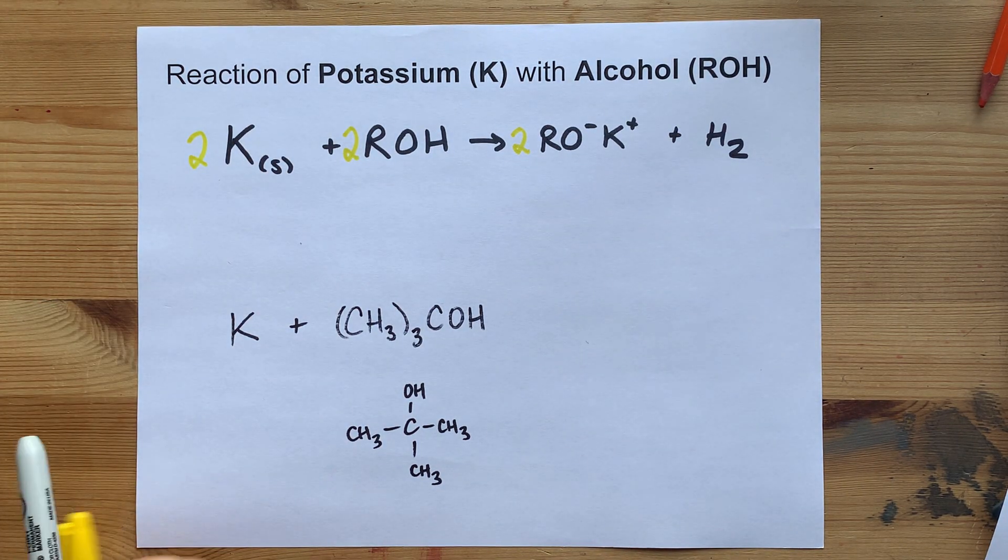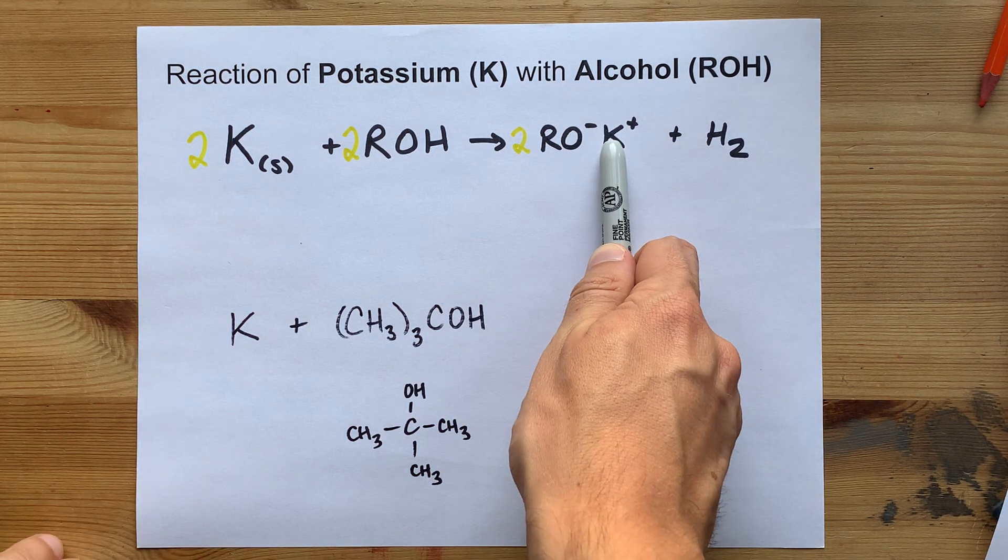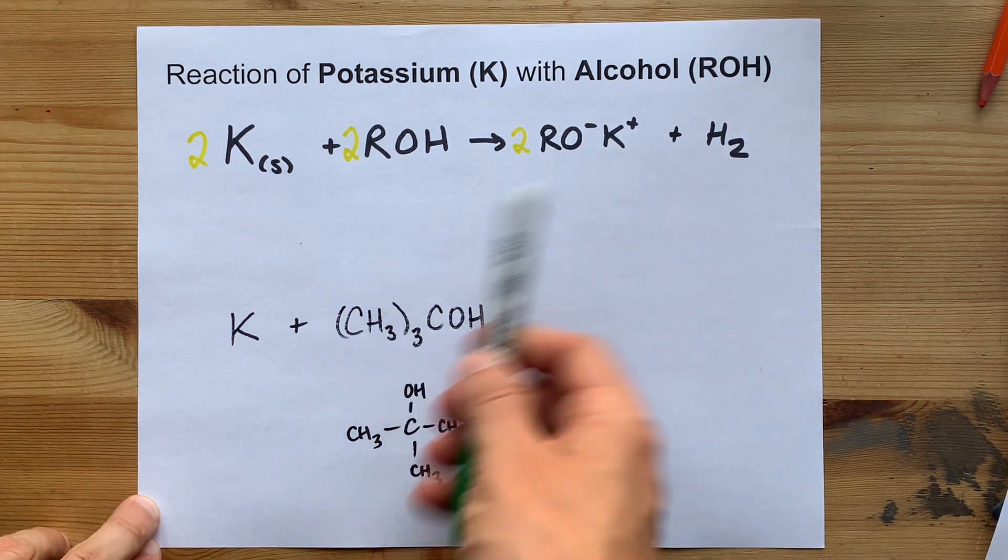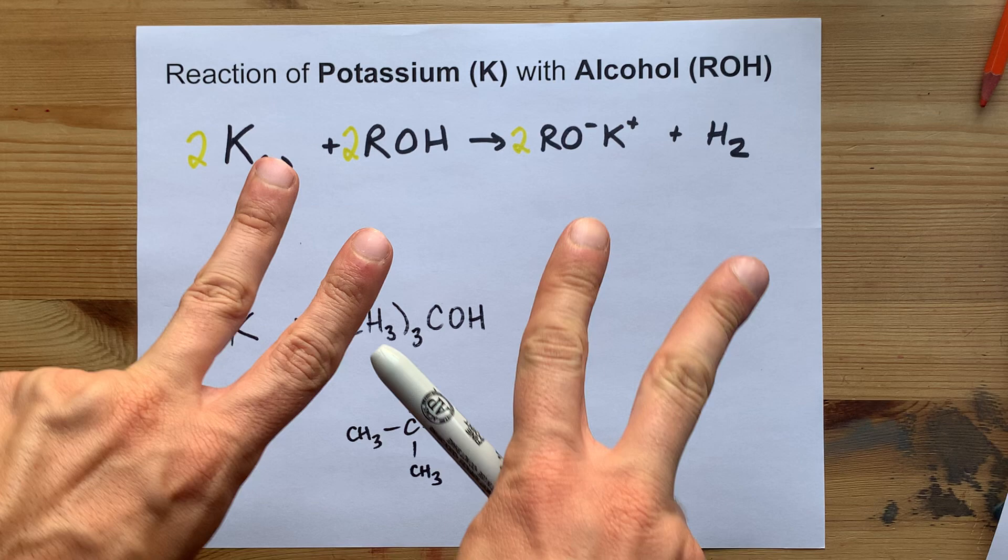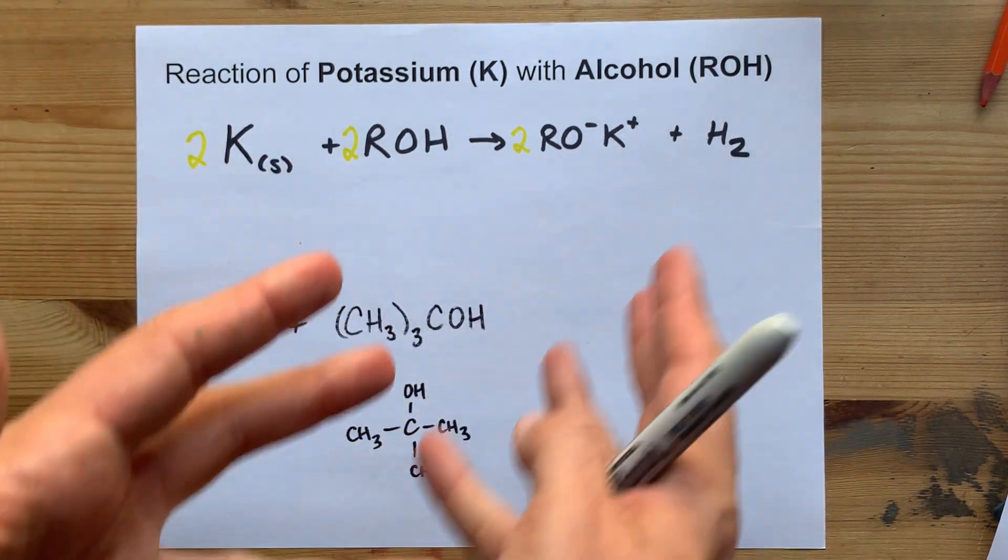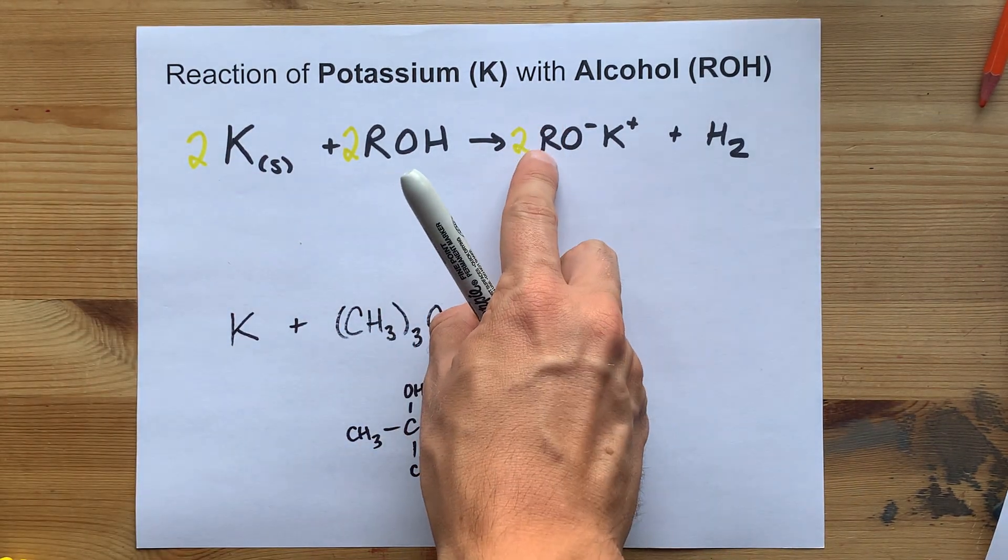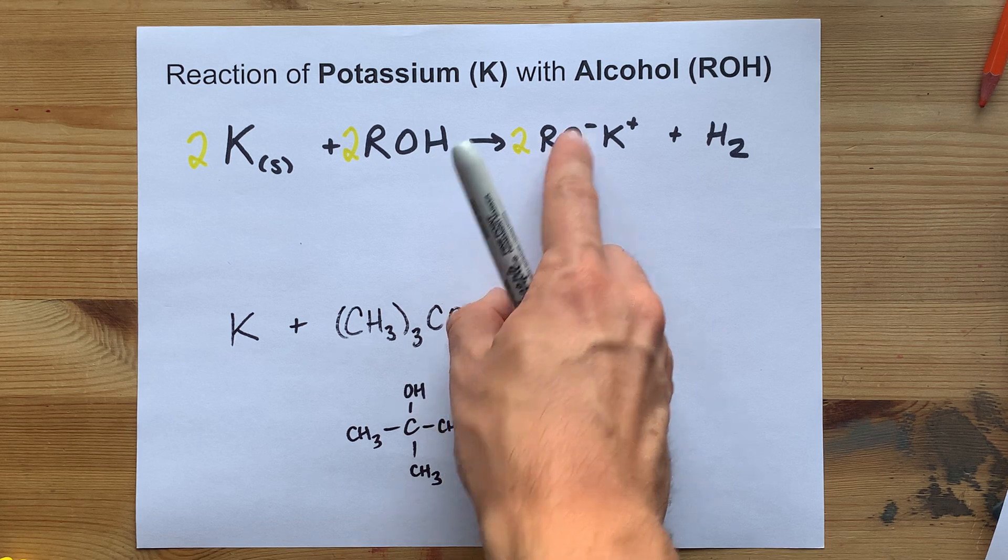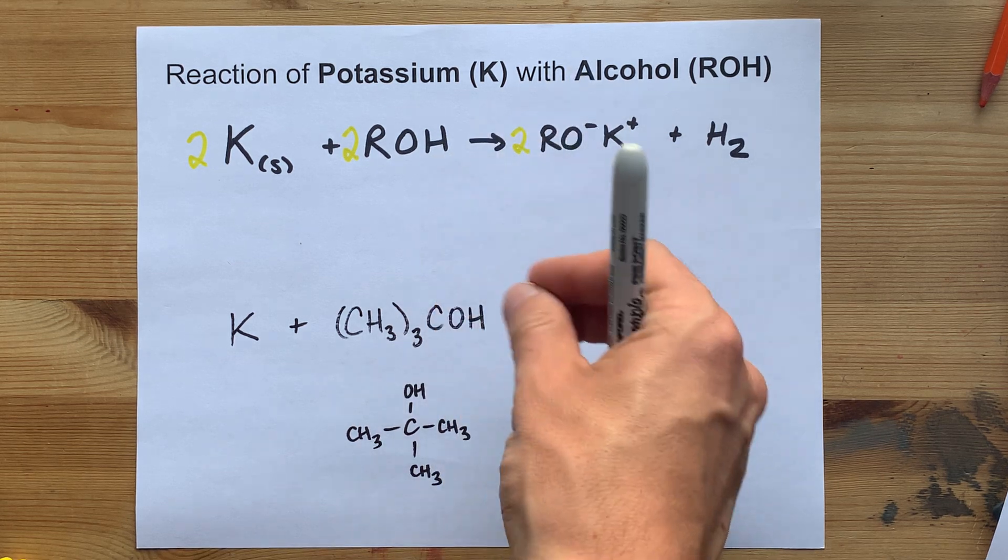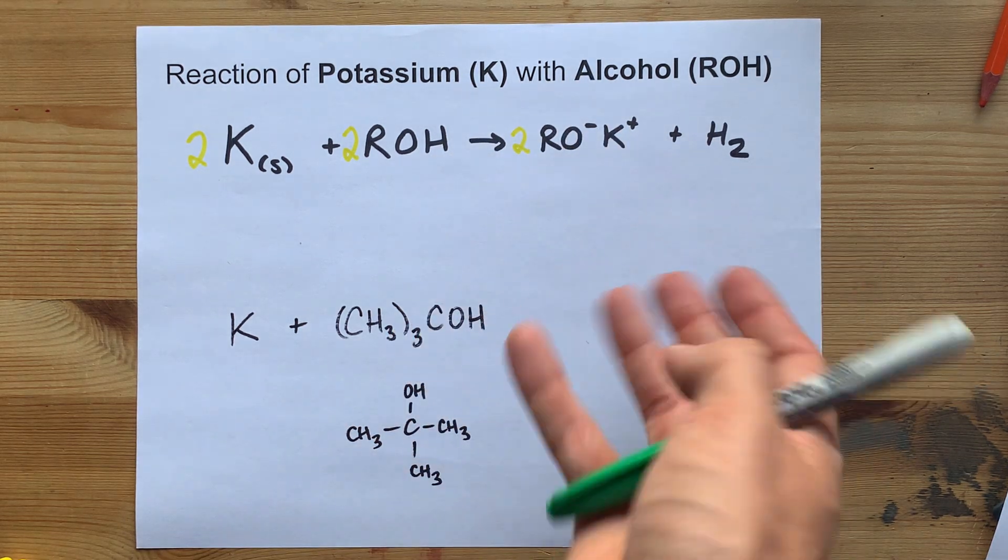What matters here is that the K and the RO, or the alkoxide, are bonded, but they're not like super bonded together. This RO minus, or the alkoxide ion, is a stronger base than, say, sodium hydroxide.